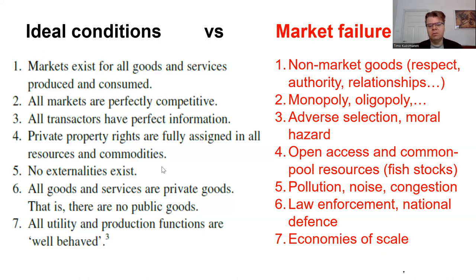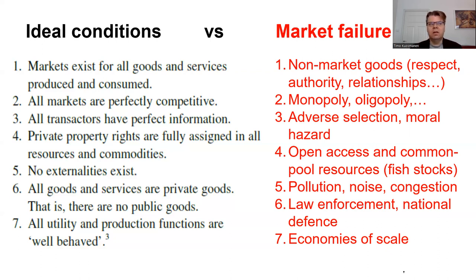The second part of the sixth condition assumes away public goods — that they are not available — which is of course a limiting assumption in models based on such simplifying assumptions. The seventh condition stated in the Perman et al. book is that all utility and production functions are well-behaved. This is of course very common in economic models. There exist some examples of violations — for example, if we have economies of scale that violate the concavity assumption of the production functions, then it is possible that a well-defined general equilibrium doesn't necessarily exist. So the seventh condition is more of a technical assumption about the existence of general equilibrium.